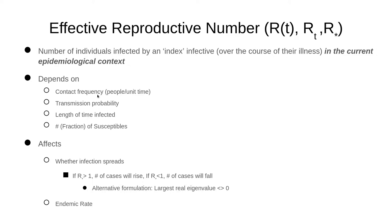This also depends on contact frequency — someone in really crowded housing or working in a crowded bus station will have lots of contacts. There's transmission probability; if that's high, this could be high. If the length of time infected is longer — if they're not discovered as a case soon, this will be higher. A homeless person might not have easy access to testing and might go a long time before being discovered, therefore having a higher effective reproductive number.